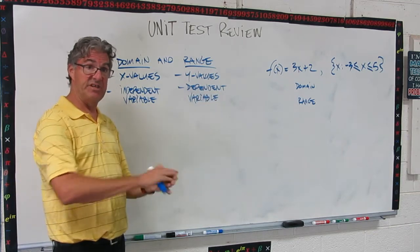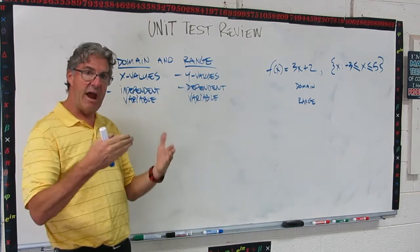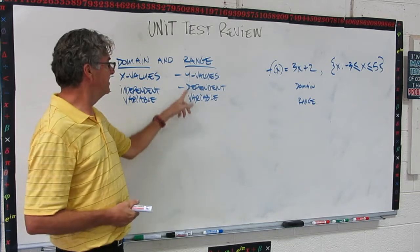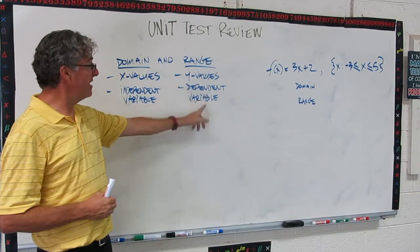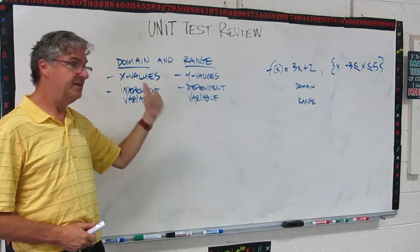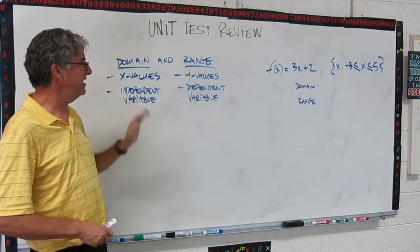The range is the function's y-values. These are the output values. These are the things that you get out after you plug in the domain for x. This is the output. This is the dependent variable. This variable, this value, depends on x. So that's how you can remember dependent versus independent.